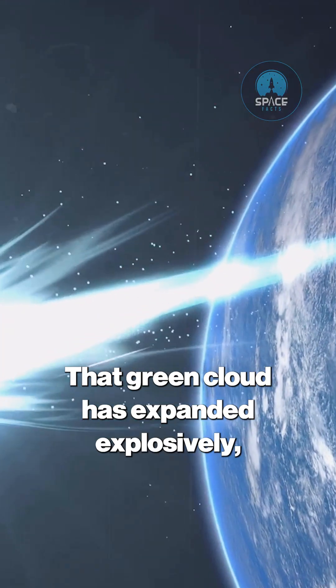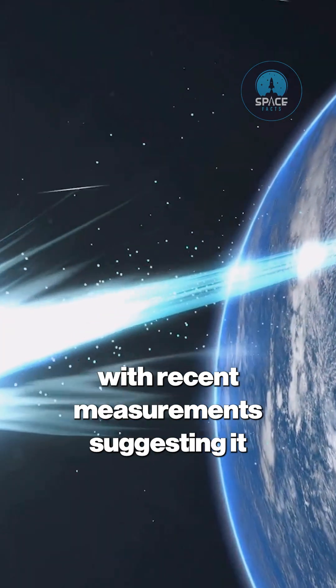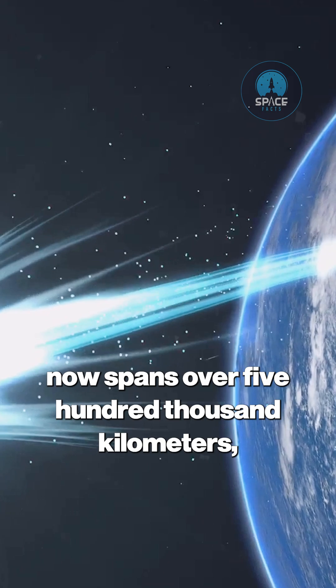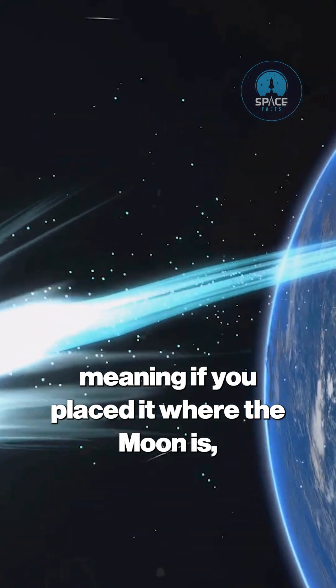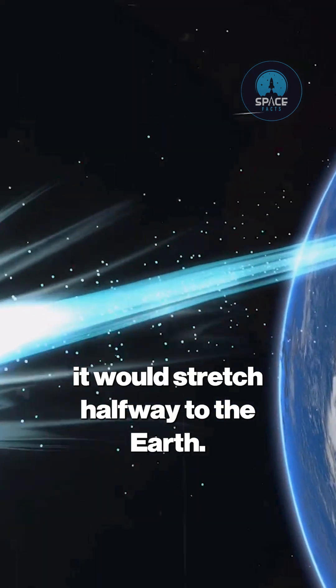That green cloud has expanded explosively, with recent measurements suggesting it now spans over 500,000 kilometers—meaning if you placed it where the moon is, it would stretch halfway to the earth.